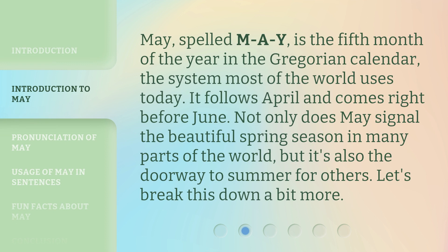May, spelled M-A-Y, is the fifth month of the year in the Gregorian calendar, the system most of the world uses today. It follows April and comes right before June. Not only does May signal the beautiful spring season in many parts of the world, but it's also the doorway to summer for others. Let's break this down a bit more.